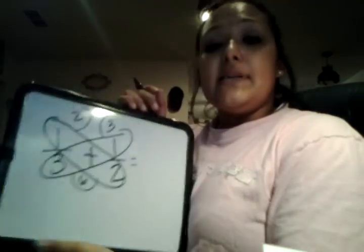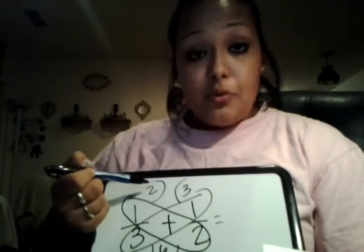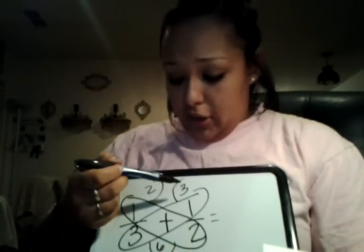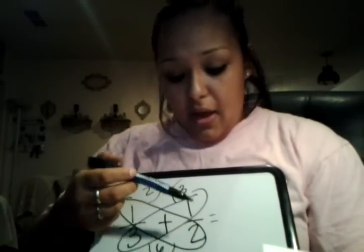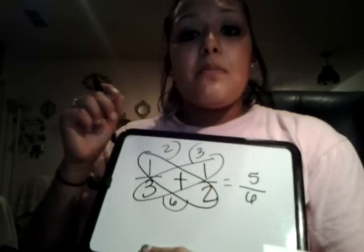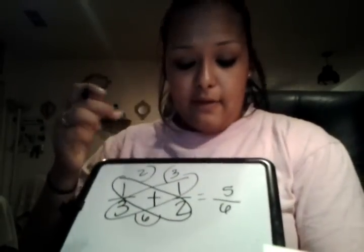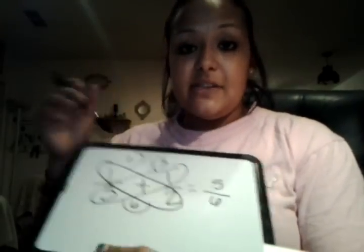Now to get the answer we're going to add across. So 3 plus 2 would be 5, and that would be our numerator. Our denominator would be 6. So 1 third plus 1 half equals 5 sixths.